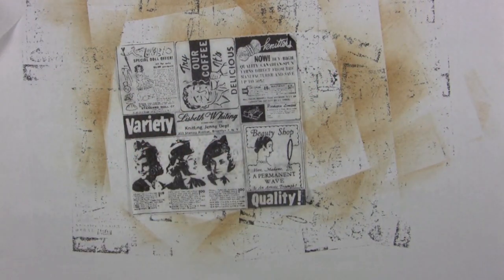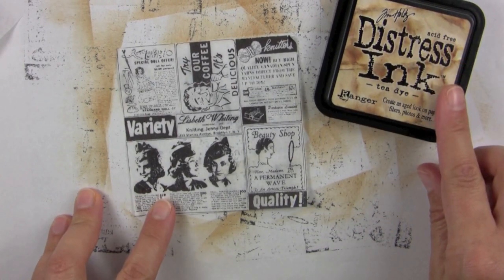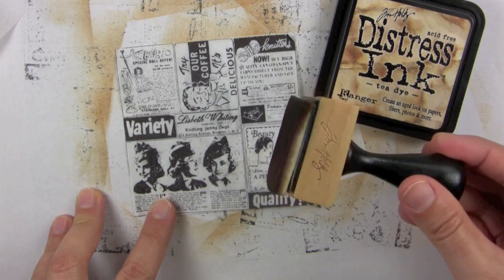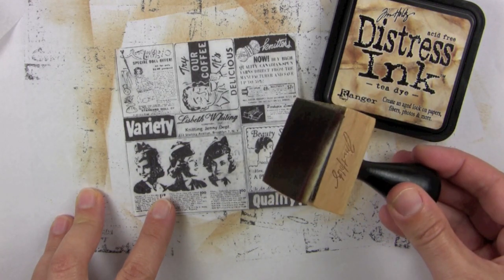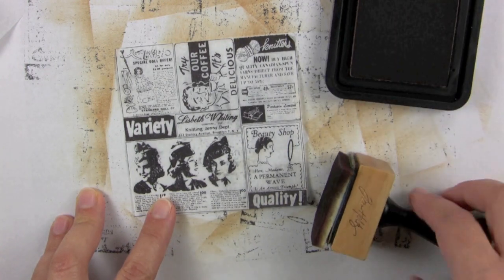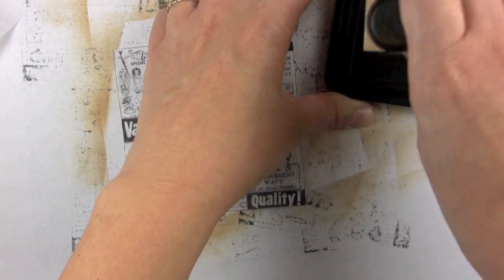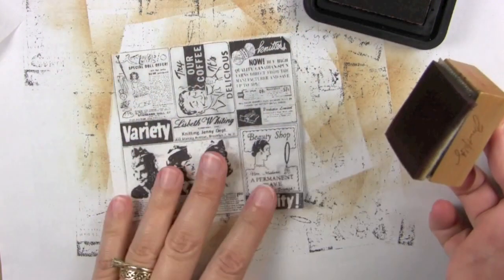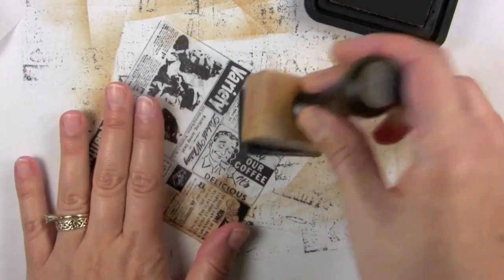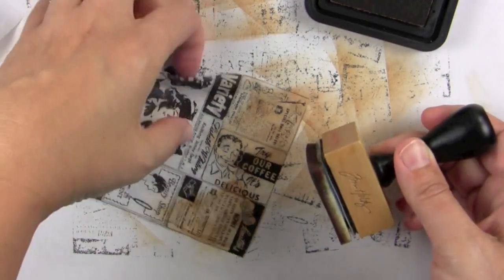So you just cut it out after it's dry and then we're going to take the distress ink by Tim Holtz. This is the tea dye and then one of these ink blending tools. This is a foam applicator that I'm using on here, but you can use like a makeup sponge or whatever sponge you have handy that's kind of fine. And this is the reason you wanted to let it dry because this ink when you put it on here it will smear if the ink that you stamped with isn't dry yet.